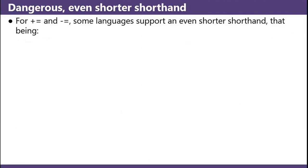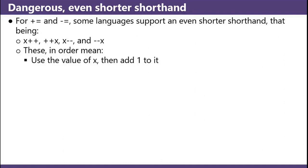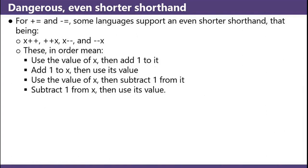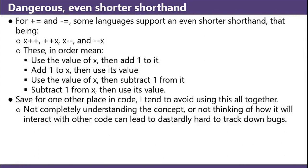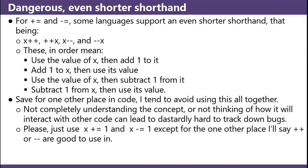For plus equals and minus equals, some languages offer an even shorter shorthand: x plus plus, plus plus x, x minus minus, and minus minus x. Those mean, in order: use the value of x and add one to it; add one to x then use its value; use the value of x and subtract one from it; subtract one from x and then use its value. I tend to avoid using these altogether — not completely understanding the concept or not thinking of how it will interact with other code can lead to hard-to-track-down bugs.